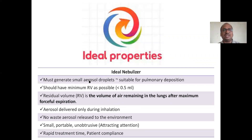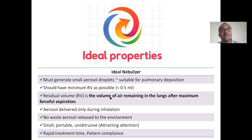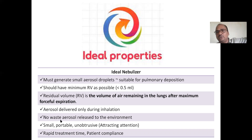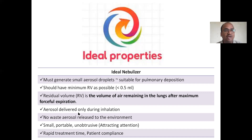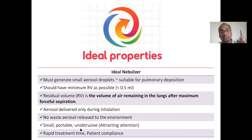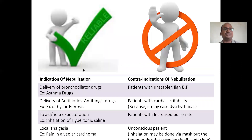Ideal properties of a nebulizer: it must generate small aerosol droplets. Residual volume should be less than 0.5 ml — very very important. Droplet size must be less than 1 micrometer for suitable pulmonary deposition into the alveoli. Aerosol should be delivered only during inhalation — when the patient is not breathing, there should be no drug gas generation. The device must be small, portable, with rapid treatment time and good patient compliance.